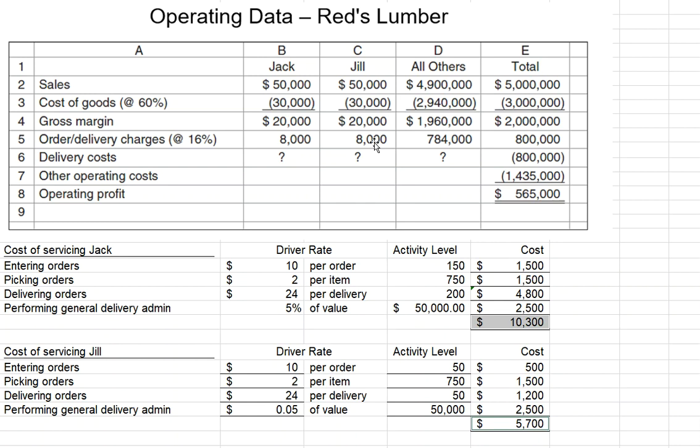We can do one of two things about this. We could drop Jack as a customer, but that doesn't make much sense. Probably the best idea is to go back and talk to Jack and suggest that he make larger, less frequent orders. This is one of the reasons we see many online retailers imposing a minimum order size for free shipping — spending $50 or $75 to qualify. They're trying to encourage larger, less frequent ordering.